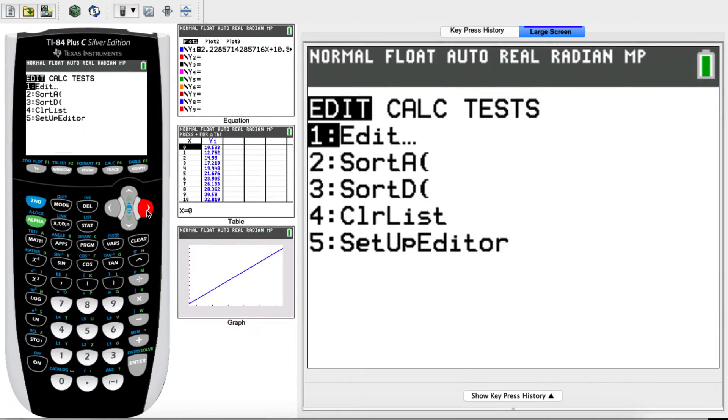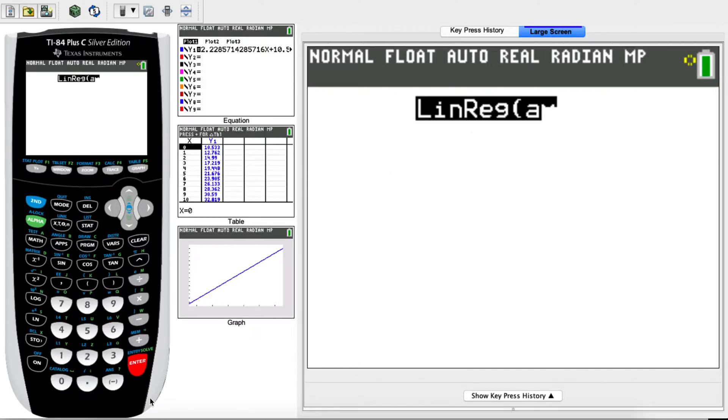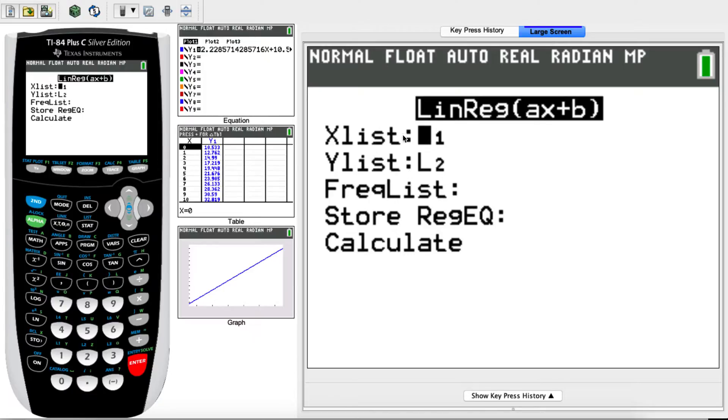You go to stats, then calculate and you go to the fourth option, which is linear regression, written as lin reg. OK, and then you press enter for that option. Your X list will include L1, Y list will include L2, frequency list will be empty. Store regression equation, if you want to store the equation, you can. I'm not going to do it in this video because you don't have to. And then you can go to calculate.